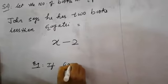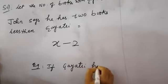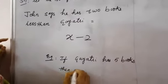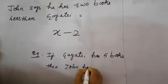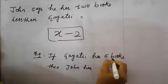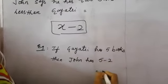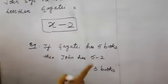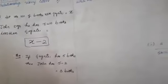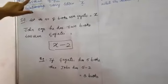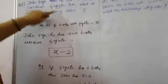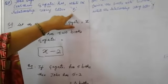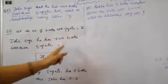For example, if Gayatri has five books then John has x minus 2, that is five minus two, which equals three books. So John has three books. It's a very simple question — you have to first understand who doesn't have a known number of books. Since Gayatri's count is unknown, we let Gayatri's books be x.